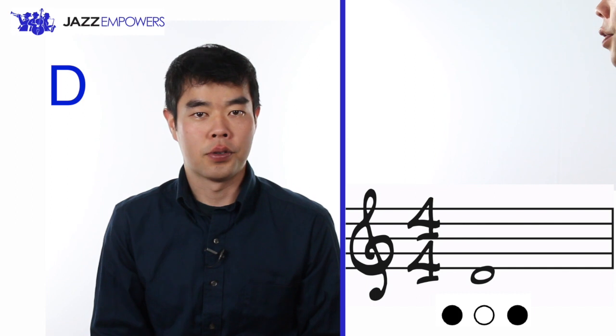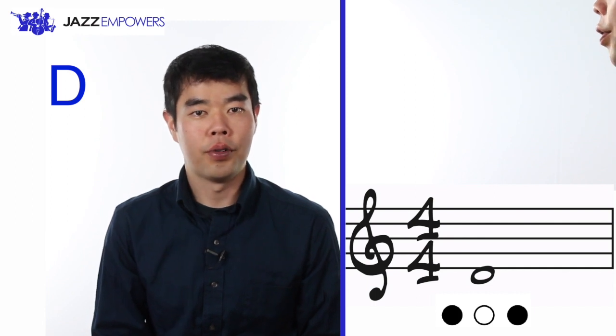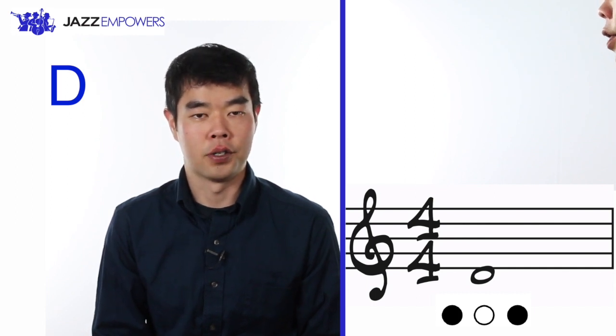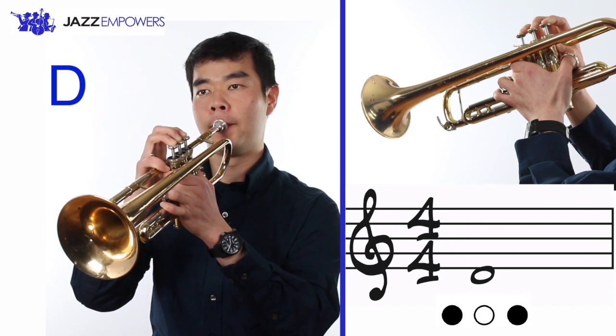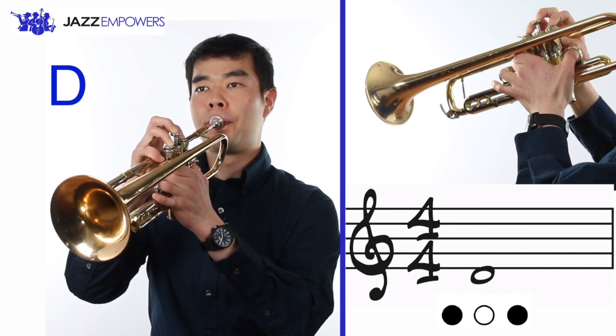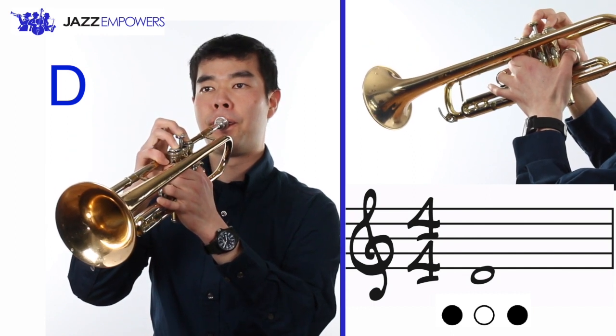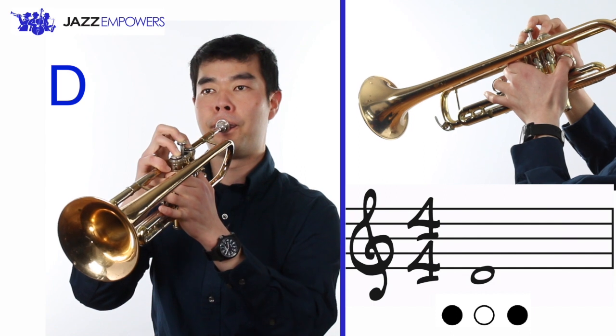Now the second note in the C major scale is D. D is on a higher partial, which means we'll have to make the hole that we're blowing through in our embouchure smaller in order to get the higher note. It sounds like this. Now try playing it with me.